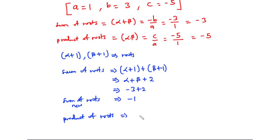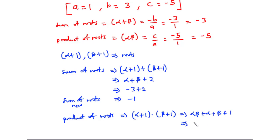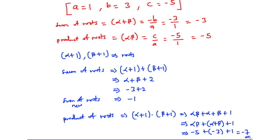Now let's find the new product of roots, which is alpha plus 1 times beta plus 1. Expanding, we get alpha times beta plus alpha plus one times beta plus one times one, which simplifies to alpha beta plus alpha plus beta plus 1. Substituting alpha beta equals negative 5 and alpha plus beta equals negative 3, we get negative 5 plus negative 3 plus 1 equals negative 7. So the product of roots is negative 7.